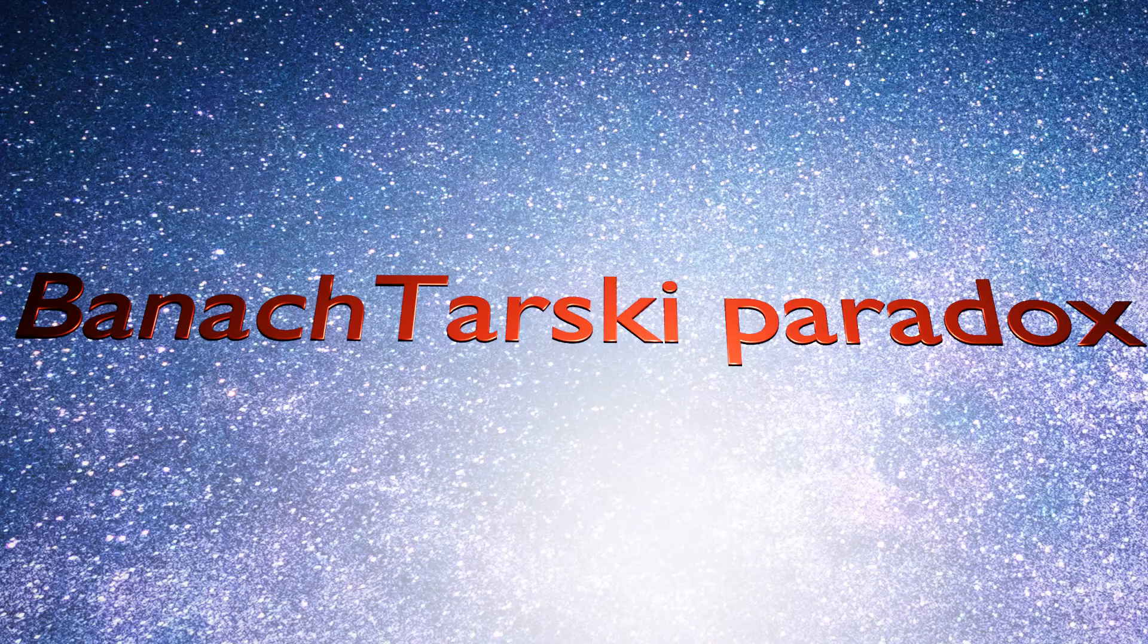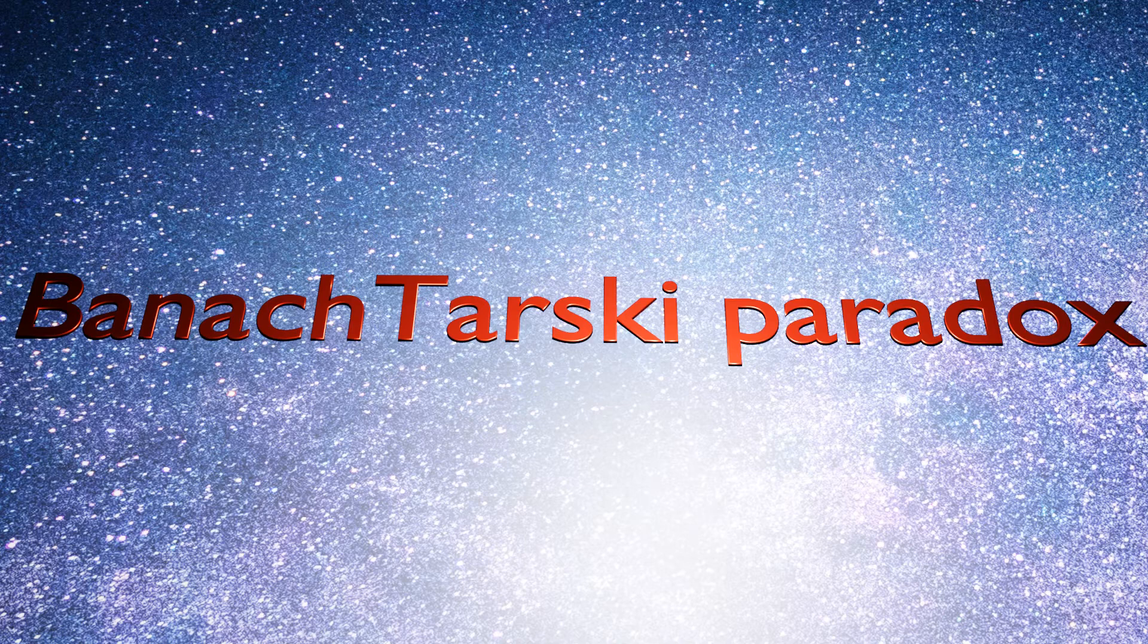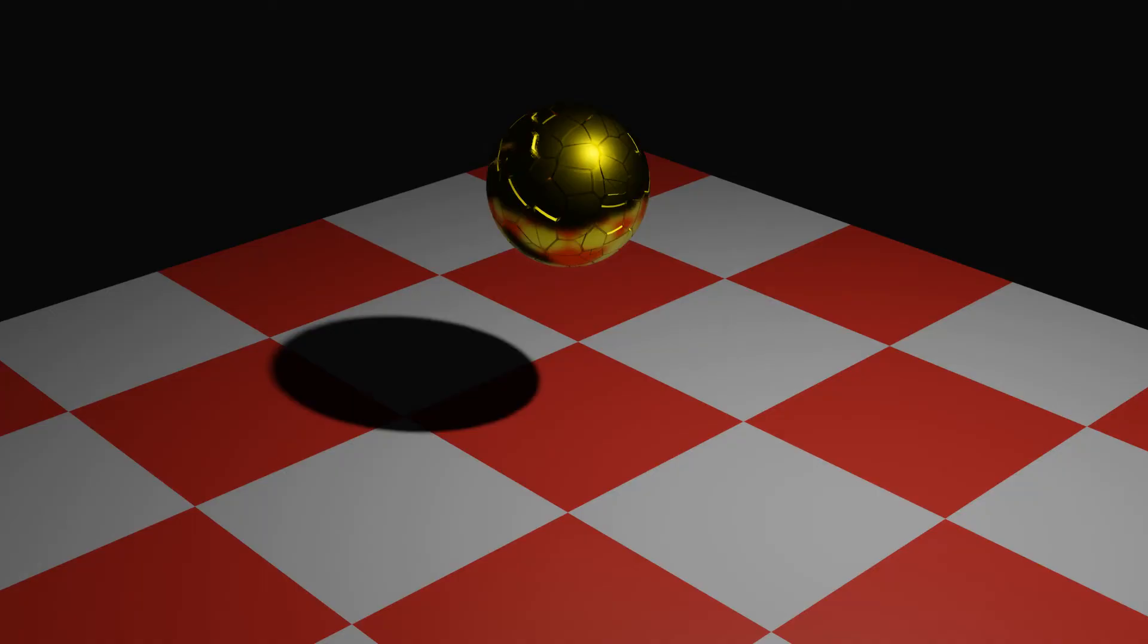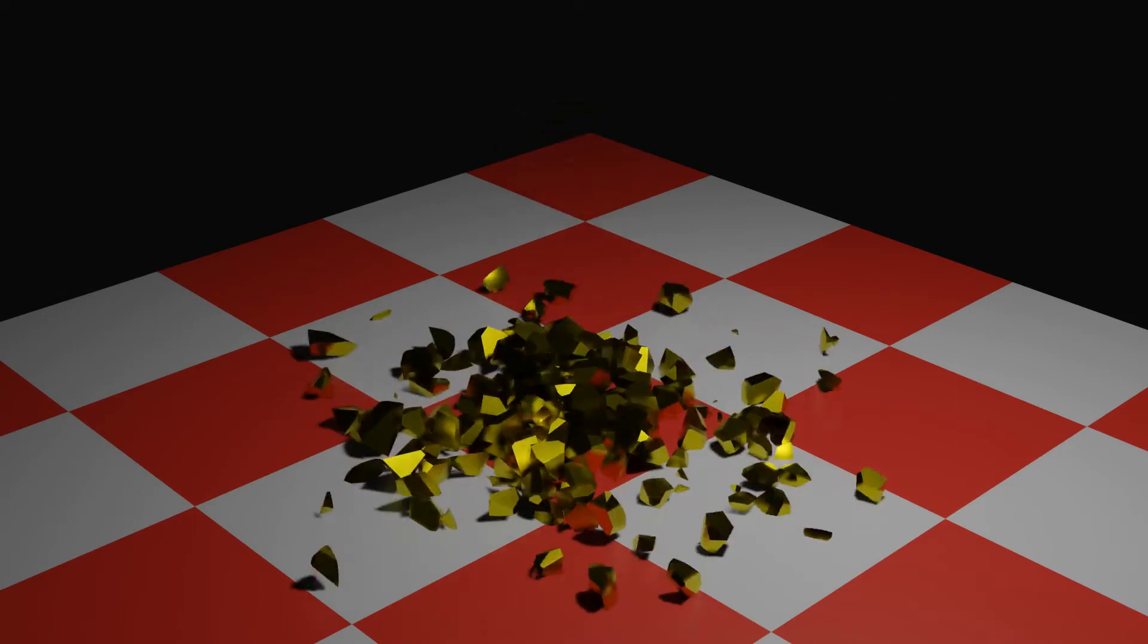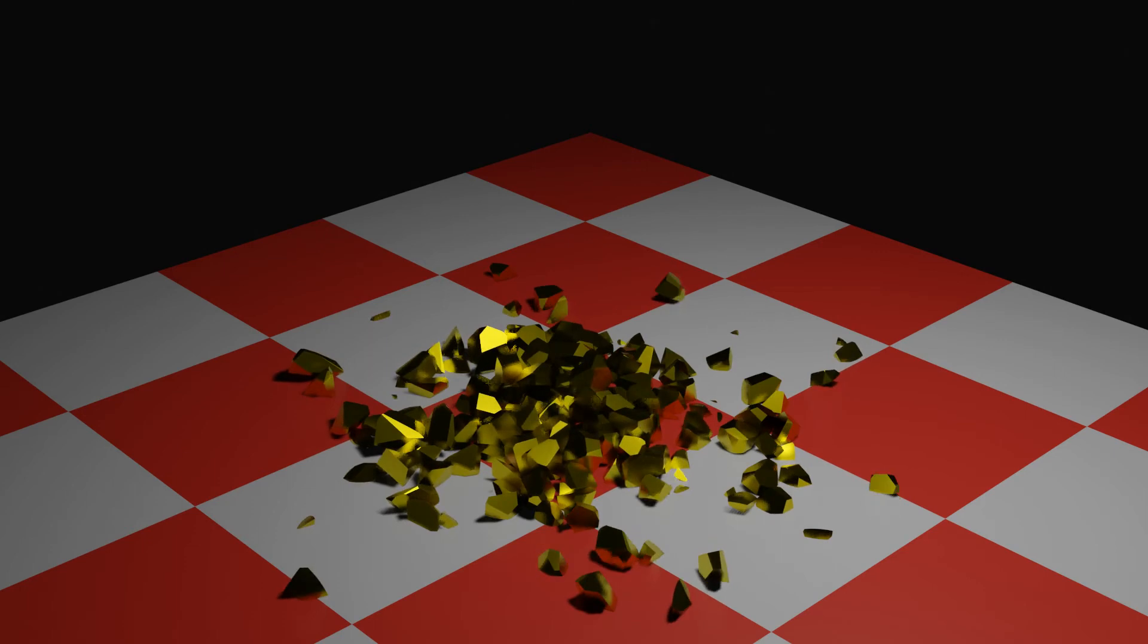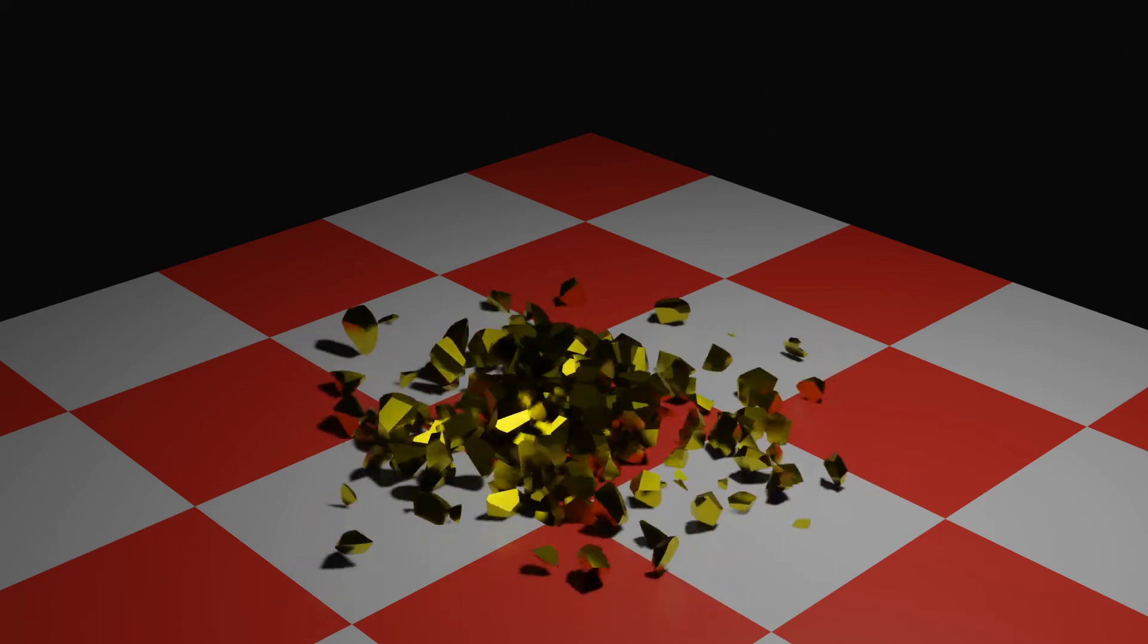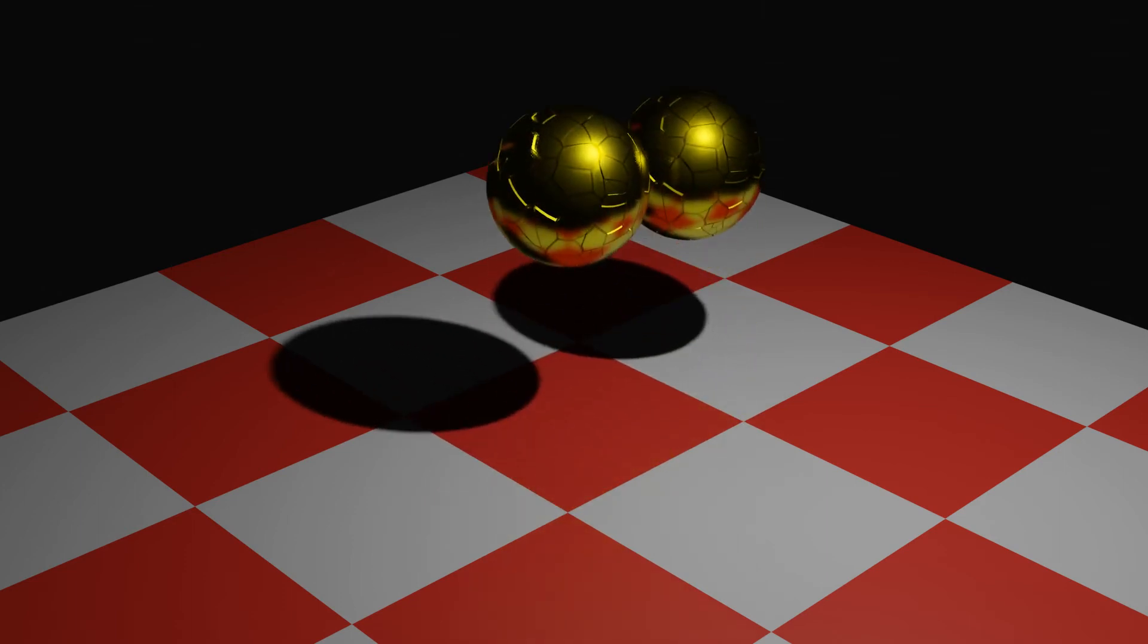One of the most weird and famous consequences of the axiom of choice is the Banach-Tarski paradox. The paradox shows that one consequence of the axiom of choice is that any solid sphere can be split into finitely many pieces, which can be reassembled to form two solid spheres of the same size. That means we've doubled the volume of our stuff just by moving the pieces around, which seems implausible. We definitely can't do that with a real ball.